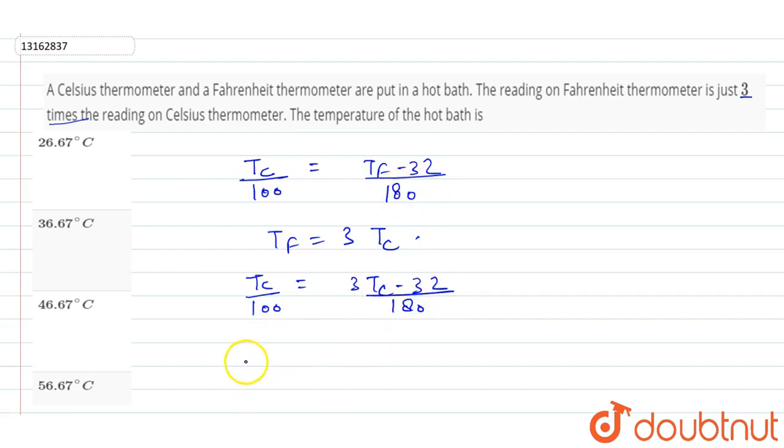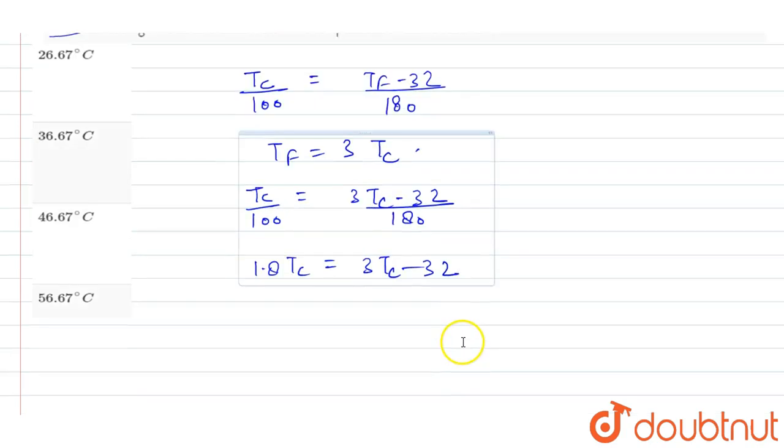So here we will find the answer. 1.8 times Tc is equal to 3Tc minus 32. And we can write that Tc will be equal to 32 upon 3 minus 1.8.